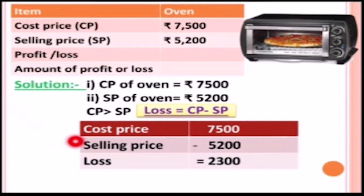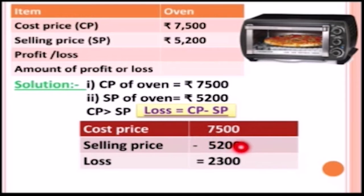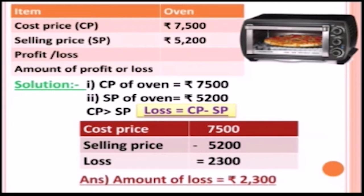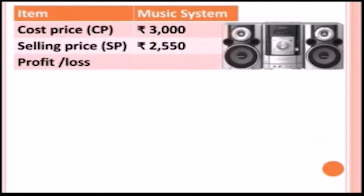Subtracting: zero minus zero is zero, zero minus zero is zero, five minus two is three, and seven minus five is two. So there is a loss of rupees two thousand three hundred. The amount of loss is rupees two thousand three hundred.